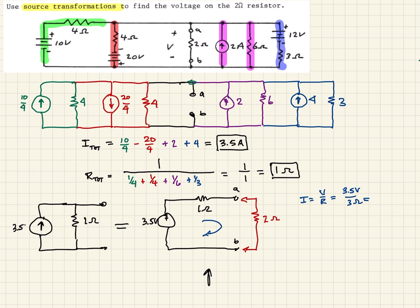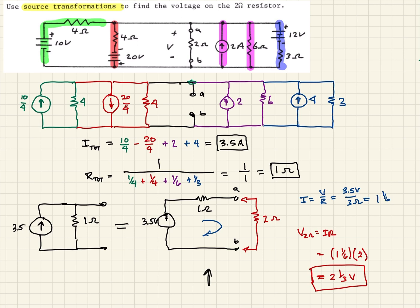When you calculate that out, you get 1 and 1/6 amps. Then the voltage across the 2-ohm resistor, using Ohm's law V = IR, is 1 and 1/6 times 2, which comes out to 2 and 1/3 volts — or 7/3 volts, same thing. That's the voltage across the 2-ohm resistor, found using the Thévenin equivalent derived through source transformation.